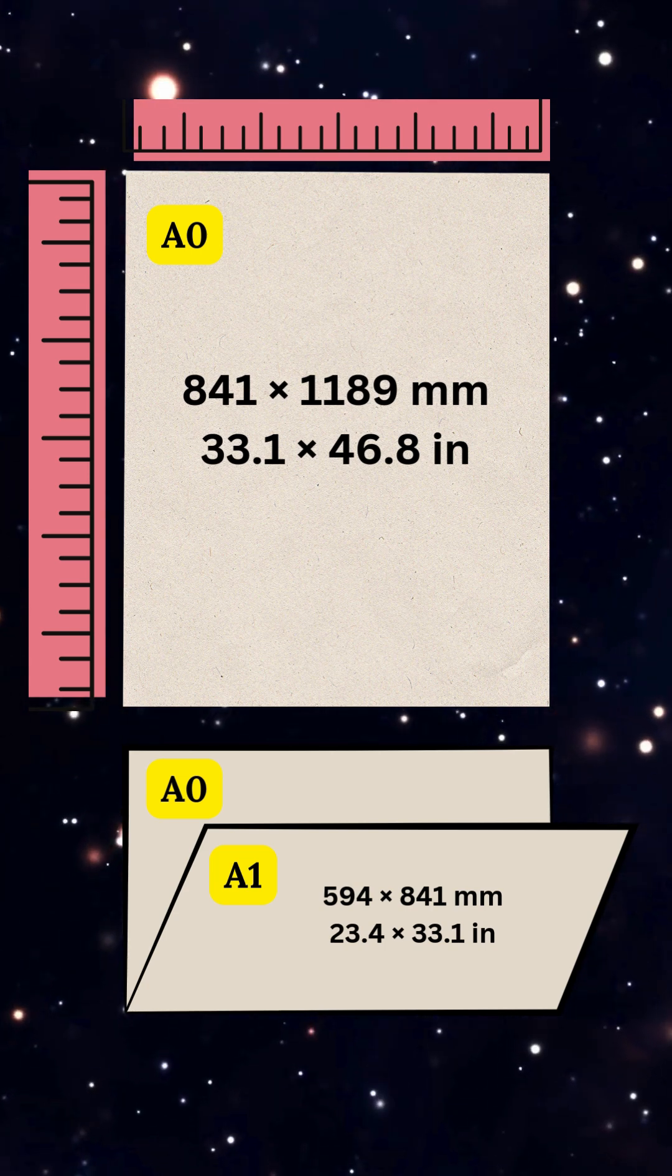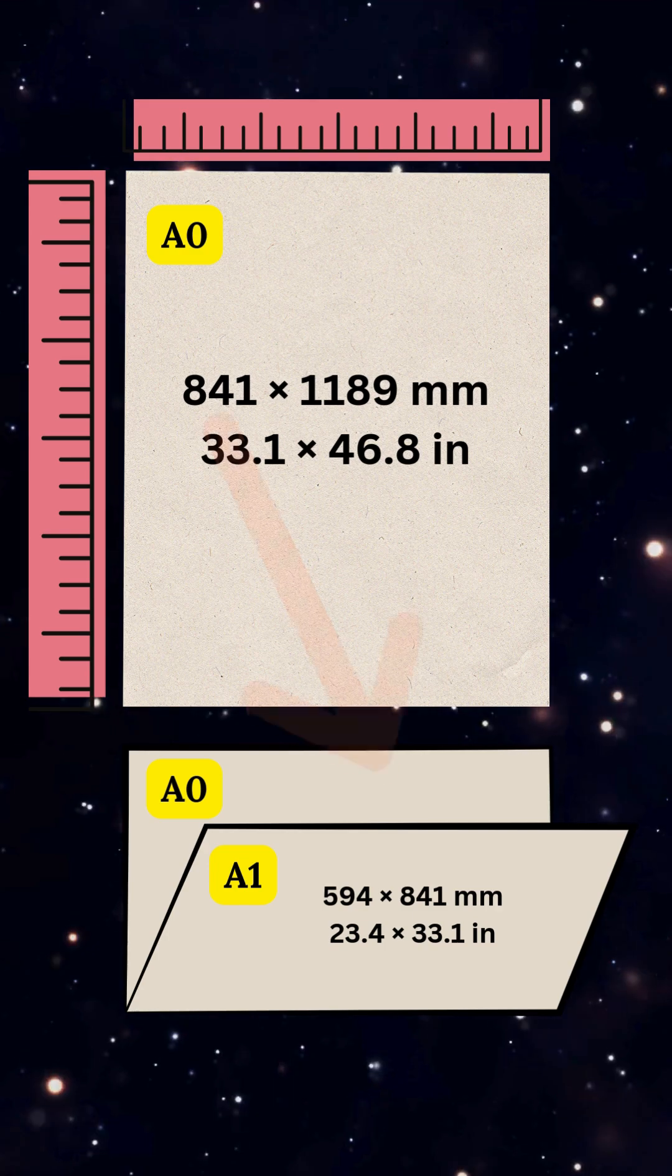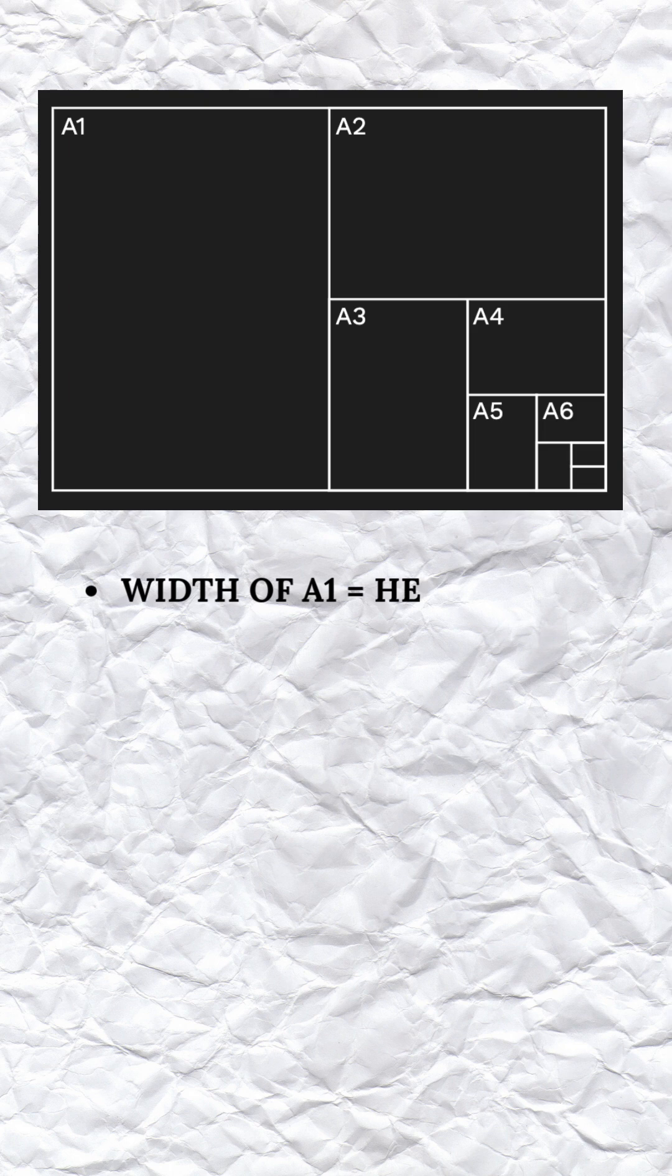For example, this is A0, the largest size, 841 by 1189 millimeters. If I fold it in half, guess what? It becomes A1. The width of A0 becomes the height of A1.